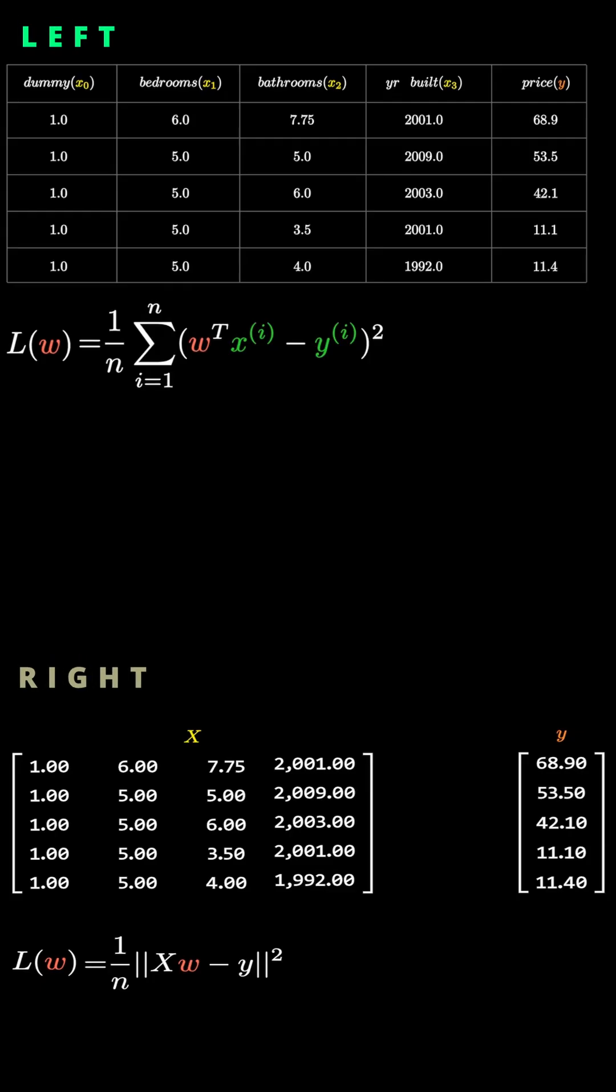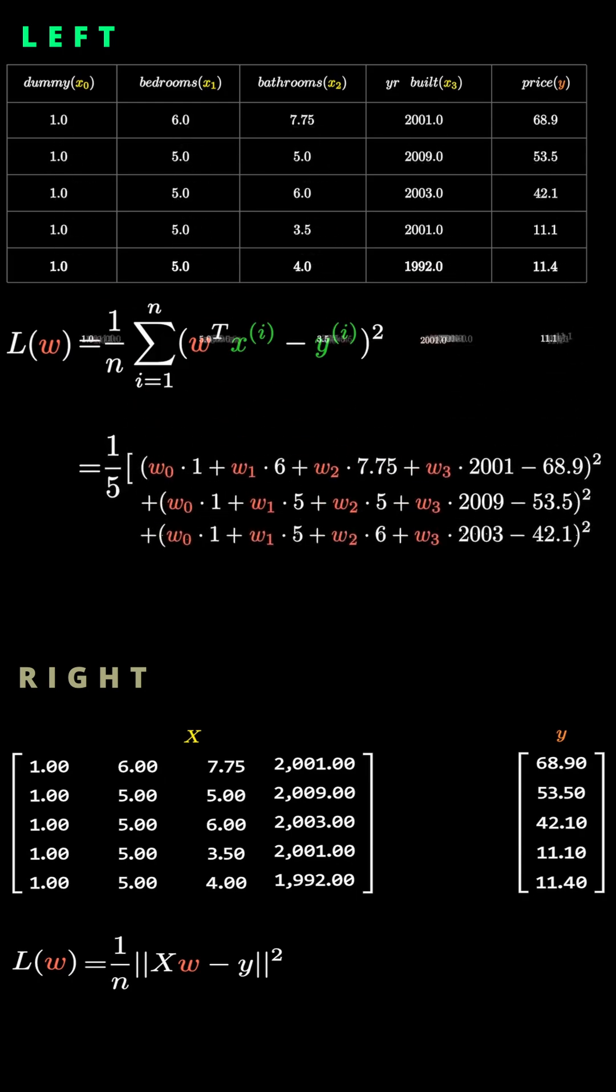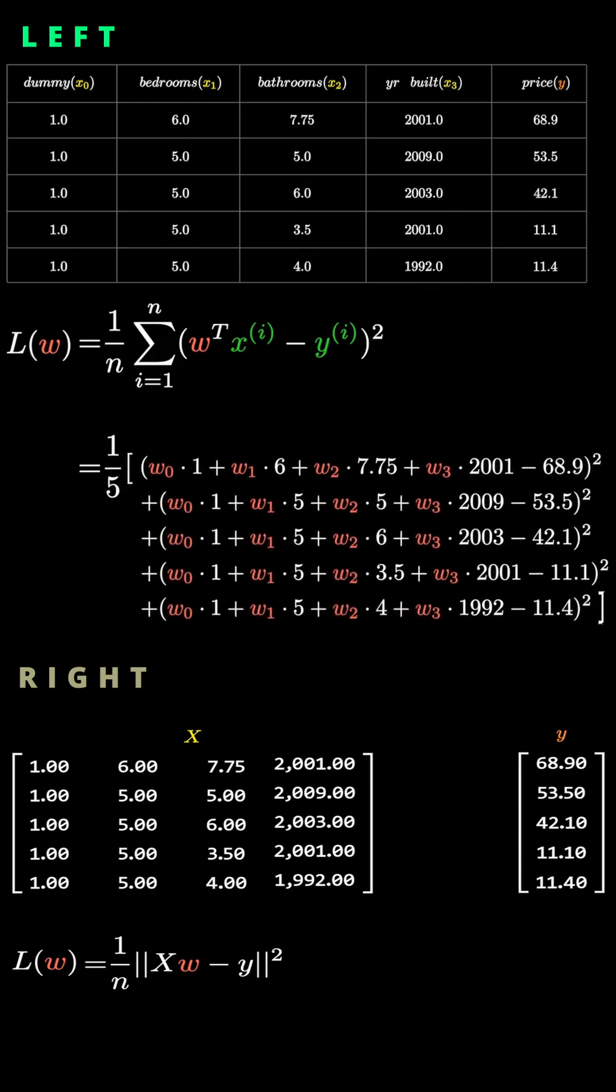Alright, let's start from the equation on the left. We have five rows of data. For each row, we take the inner product of the features with the W vector, subtract the actual Y value, square the result, and sum them all up. That gives us SSE, the sum of squared errors. And dividing by 5, we get the MSE.